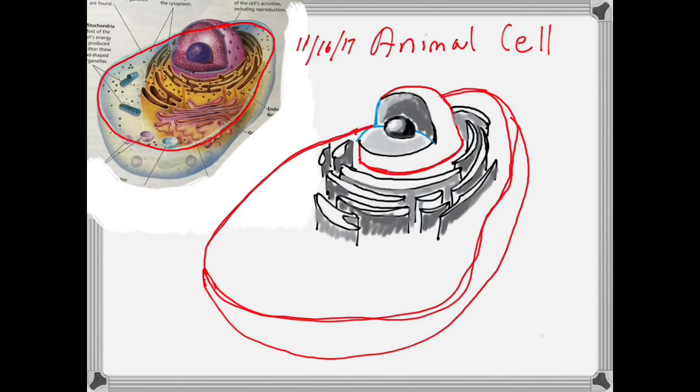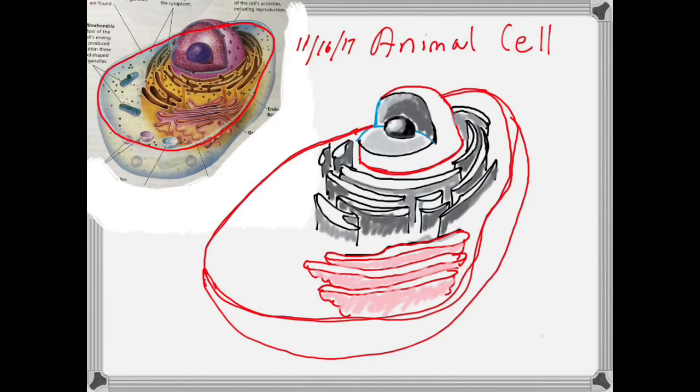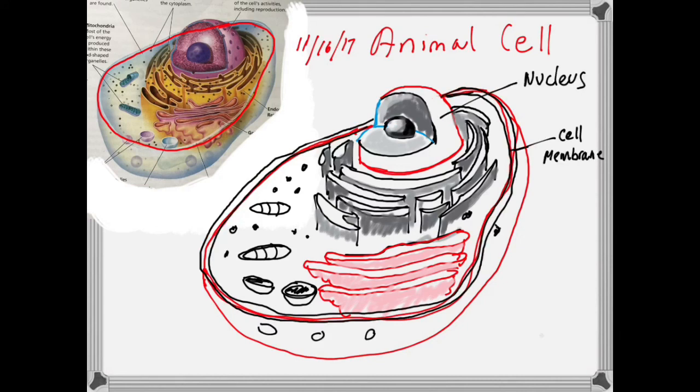The golgi body receives materials from the endoplasmic reticulum and sends them to other parts, like these mitochondria. We'll just make those into ovals. Lysosomes—all these little dots, these little black dots in the diagram. Ribosomes, cell membrane.